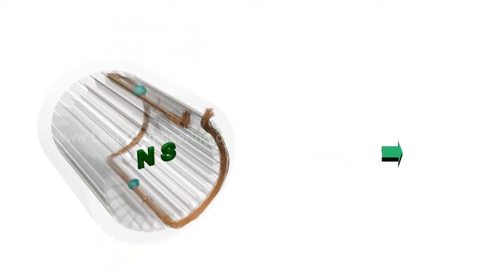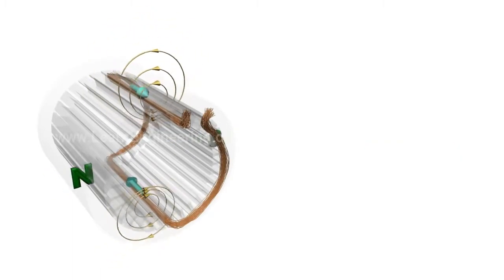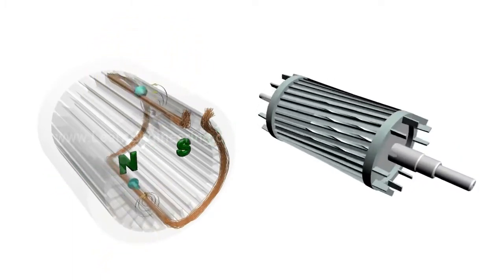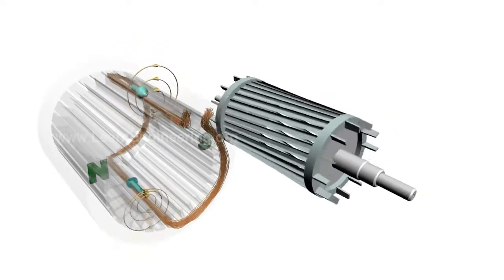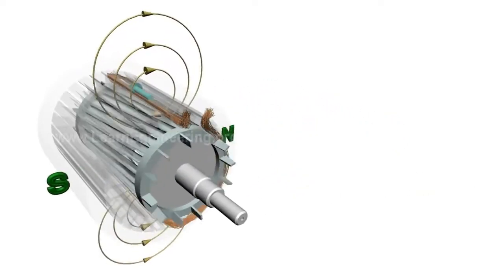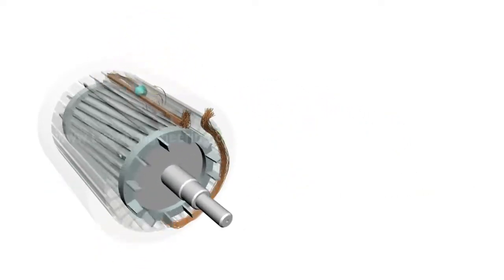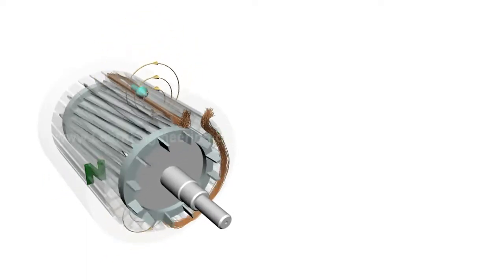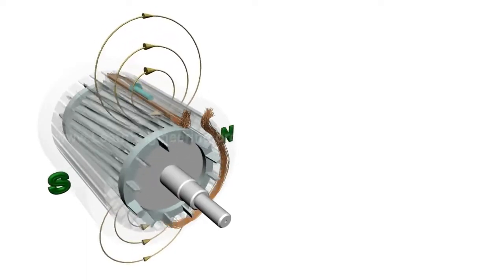Working of a single phase induction motor is simple. Just put one rotor, which is already rotating, inside such a magnetic field. You can note one interesting thing: the rotor will keep on rotating in the same direction.